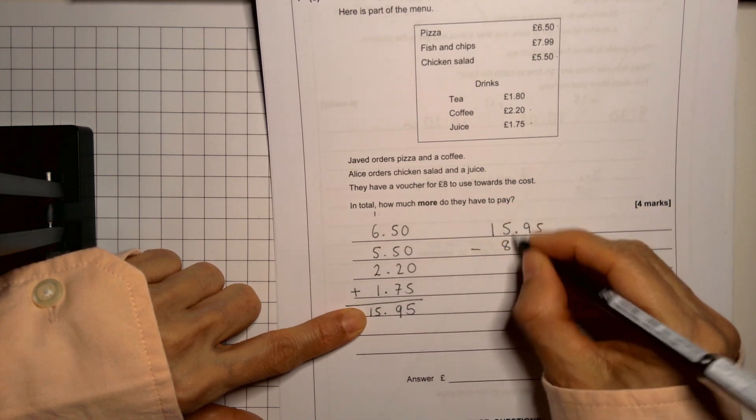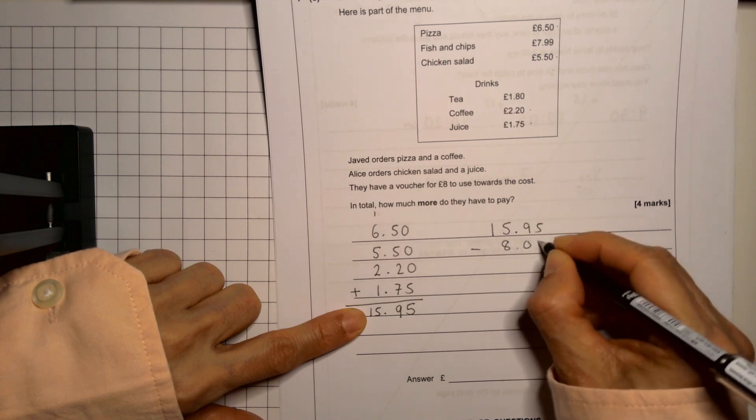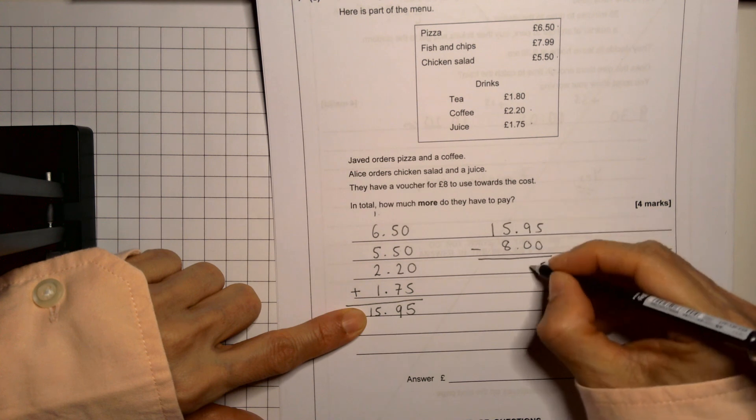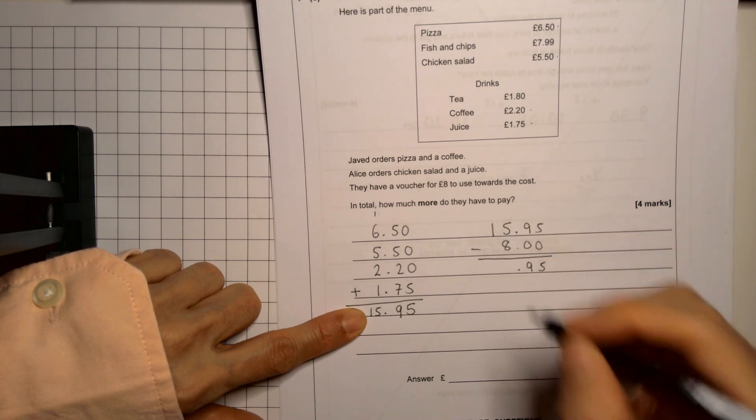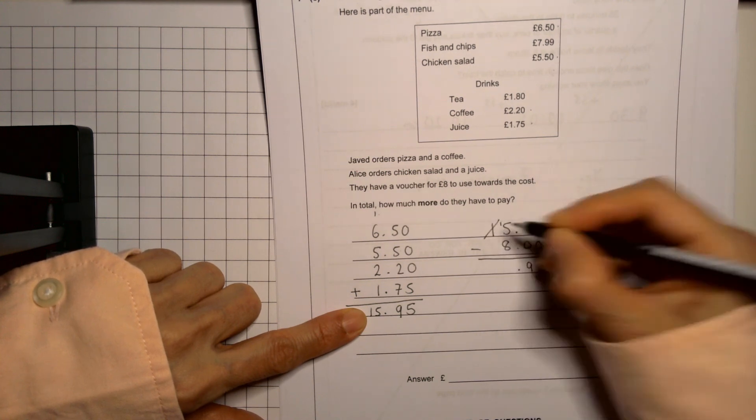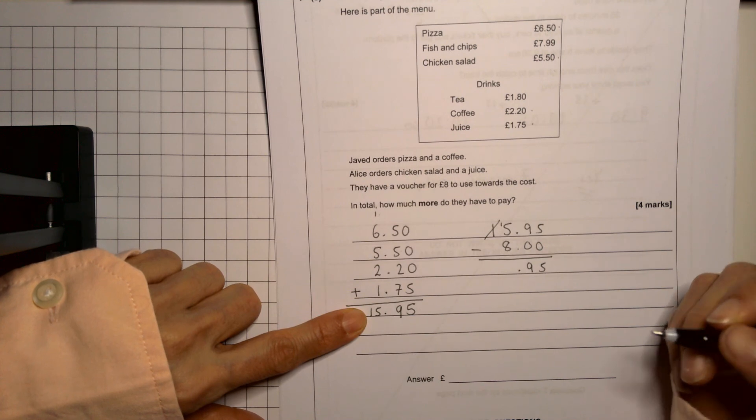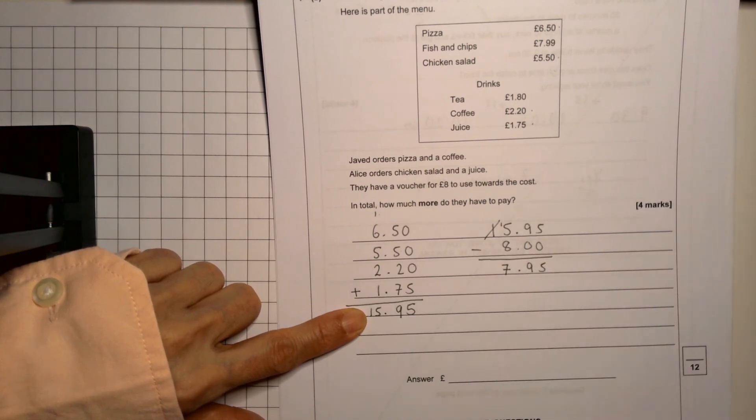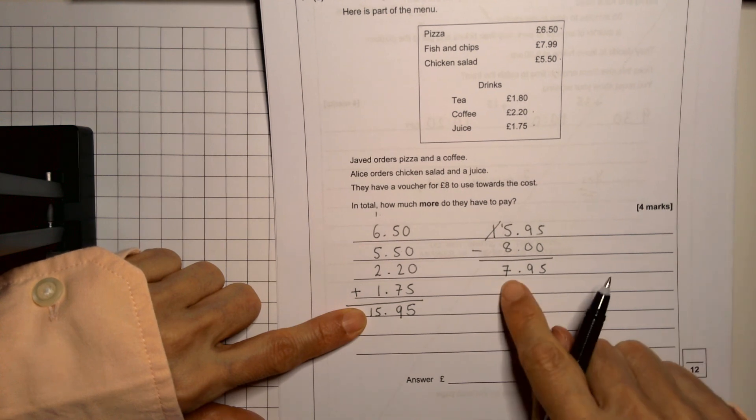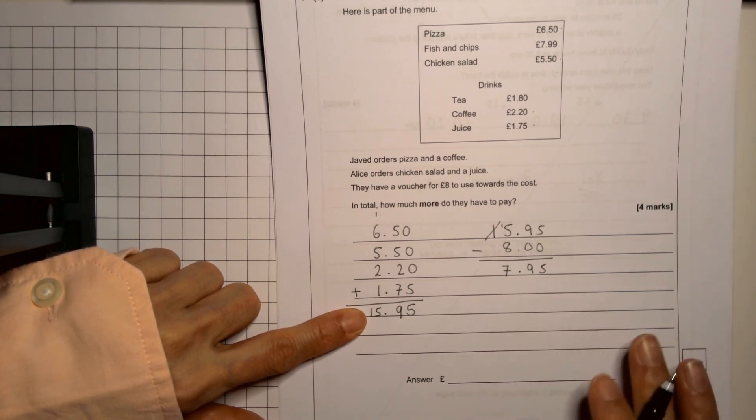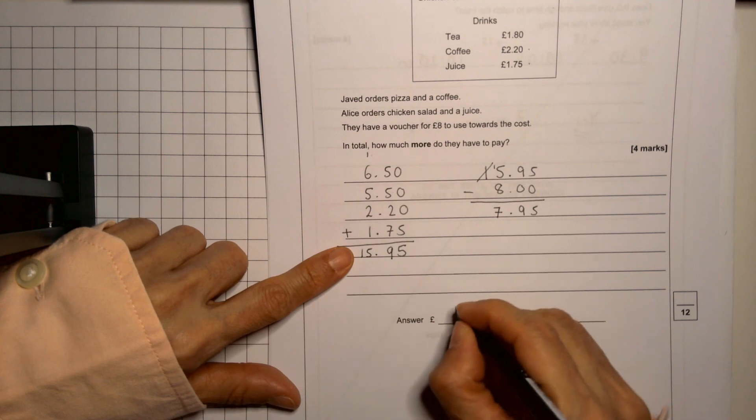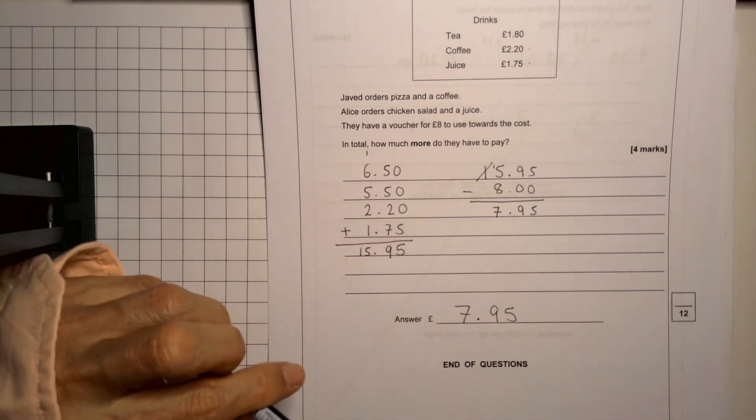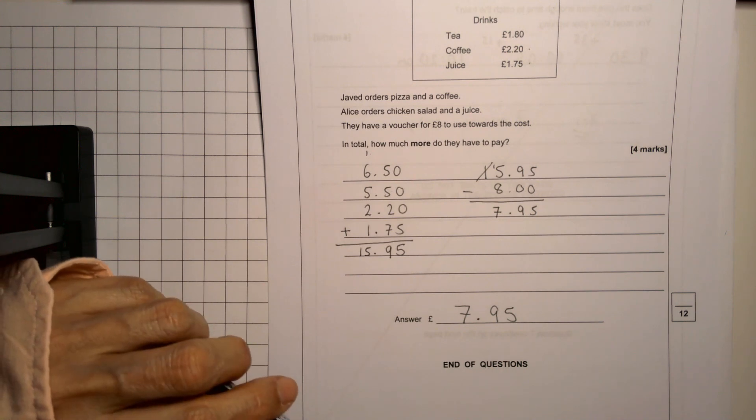5 take away nothing is 5. 9 take away nothing is 9. 5 take away 8 I can't do so I'm going to have to borrow. So now I have 15. 15 take away 8 leave me with 7. 7 plus 8 is 15. So this is how much more they have to pay. So in total, how much more do they have to pay? Seven pounds and 95 pence. Well then, that's the end of that one. So that looks quite good. Bye.